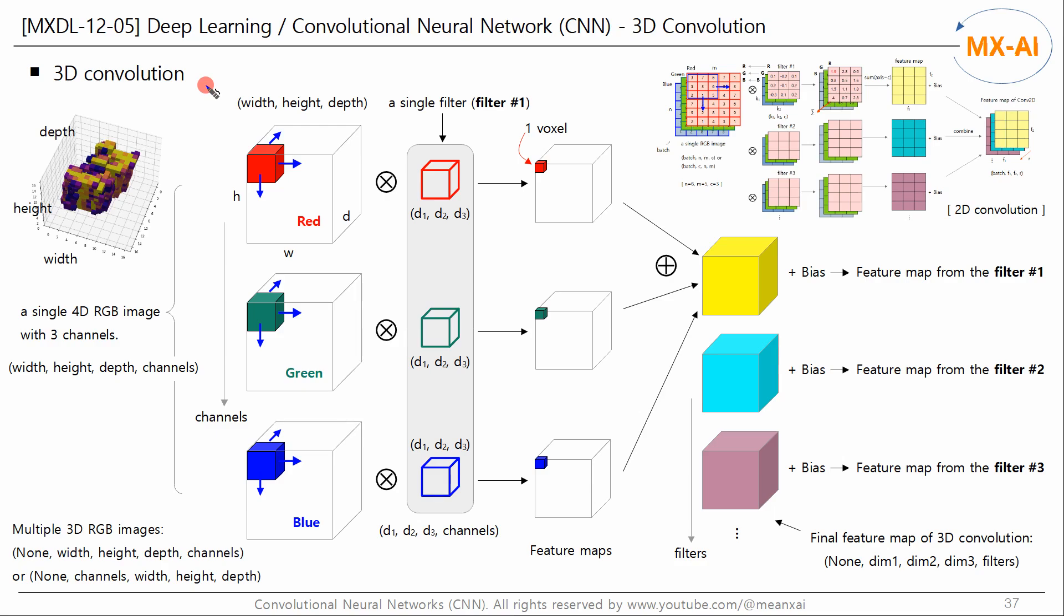Let's look at the 3D convolution process. We looked at the 2D convolution in the previous video. The 3D convolution is similar to this process. The only difference is that the dimensions of the input data, filters, and feature maps are increased by one, and the filters move to three dimensions.